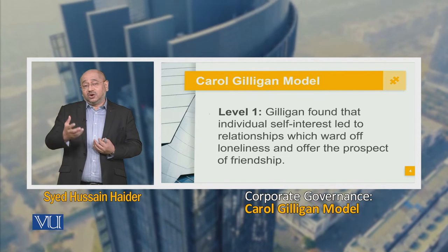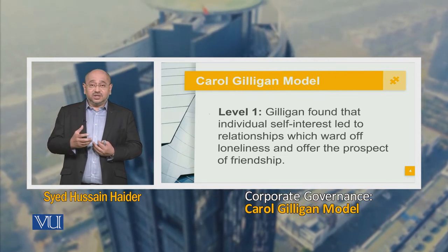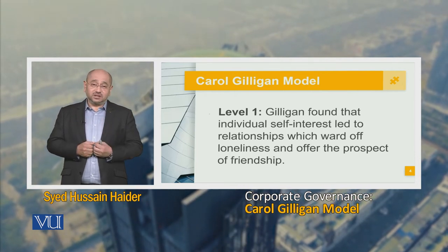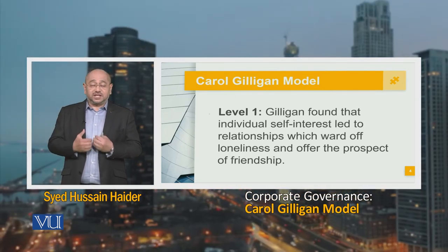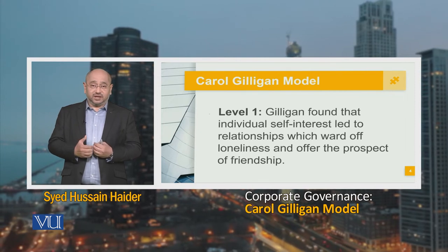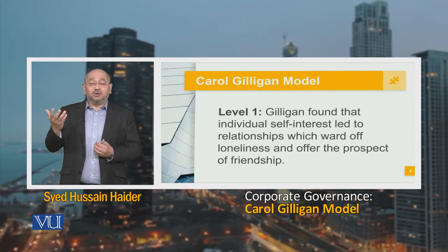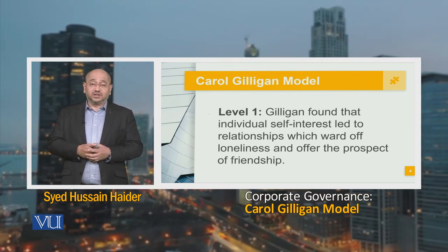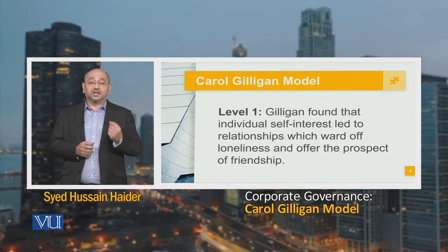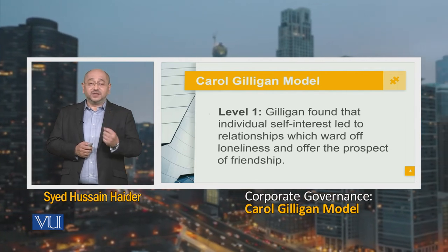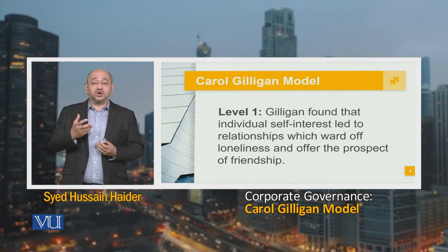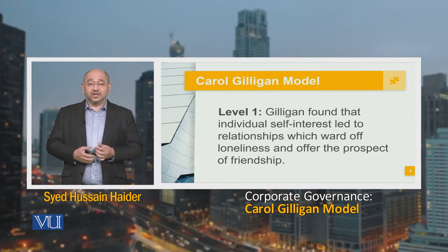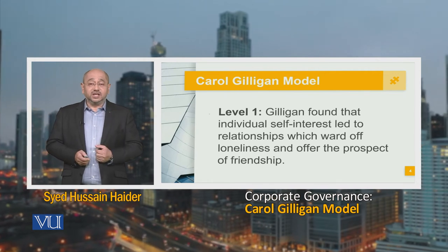The same feeling exists within organizations. Organizations want loyal employees, and loyal employees want good organizations — a relationship based on mutual trust and an element of mutual care. Even in the age of cutthroat competition, there is this element of care, compassion, and trust. When properly exhibited and incorporated into an organization, it leads to a healthy, positive, empathetic organization. That is what Gilligan was essentially looking at.